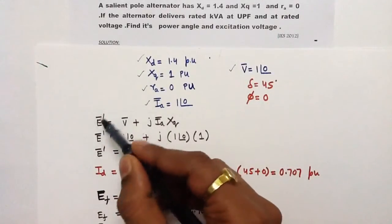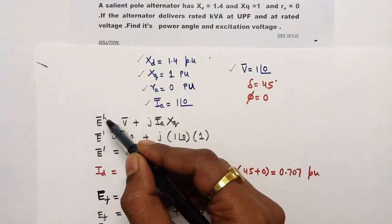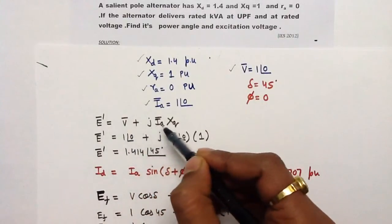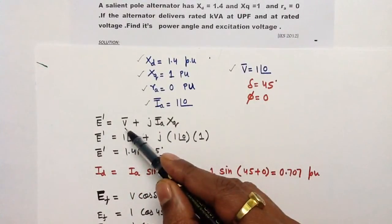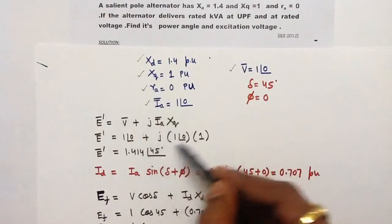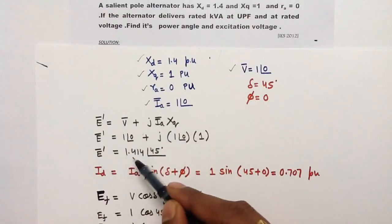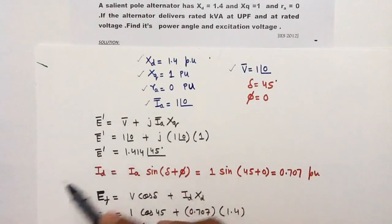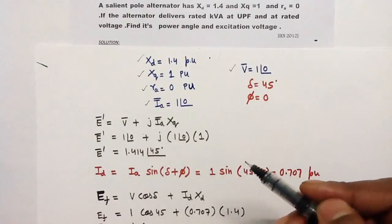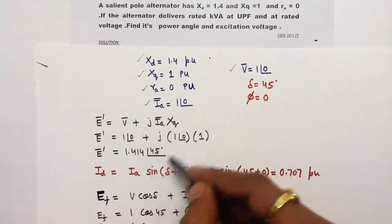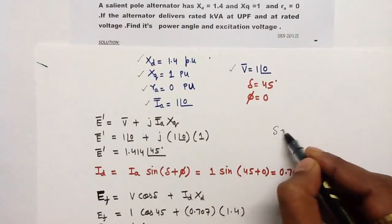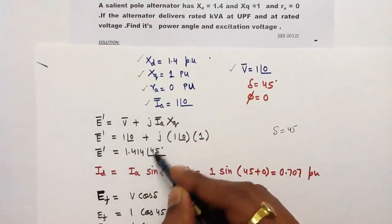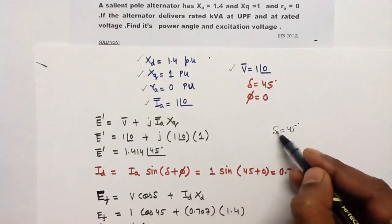The value of e-dash, the quadrature axis locator, can be found as: e-dash equals V plus j·ia·xq. Substituting the values of V, ia, and xq, you get e-dash equals 1.414 at angle 45°. The work of e-dash is now complete — its purpose was to find the value of delta, and here the value of delta is 45°. The angle of e-dash denotes the value of delta.